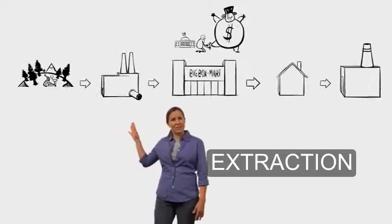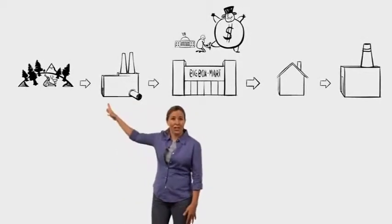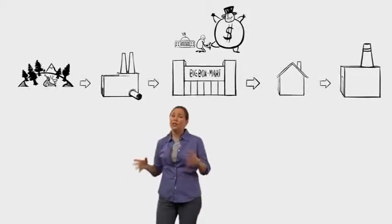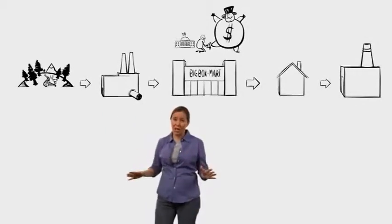Okay, so let's see what else is missing from this picture. We'll start with extraction, which is a fancy word for natural resource exploitation, which is a fancy word for trashing the planet.